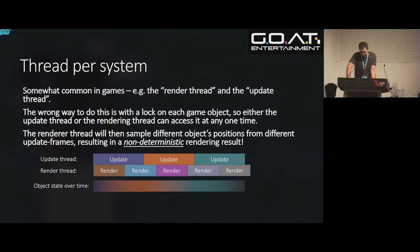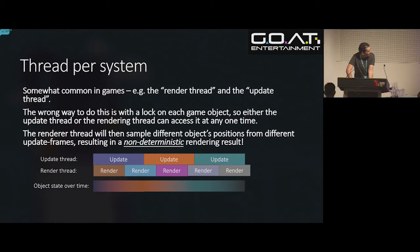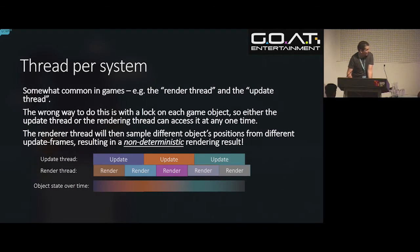This is complete bullshit because it leads to completely non-deterministic rendering. The update thread can't update every object simultaneously — it does them one at a time. If the render thread is running simultaneously and sampling object state, it's going to get some objects updated and others not. You get objects jittering between frame positions and all sorts of terrible things. There are actually games that have shipped using this, which is bad.